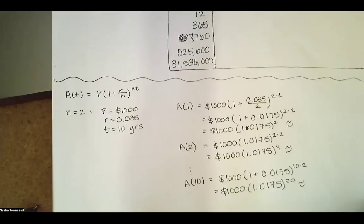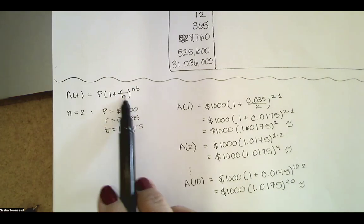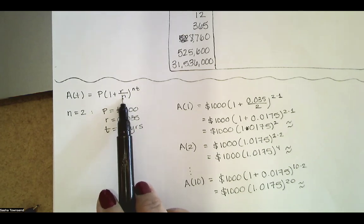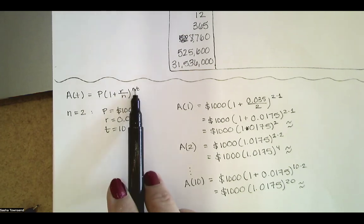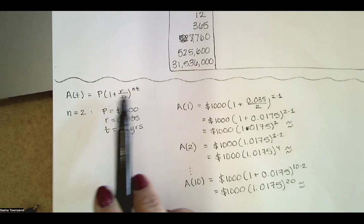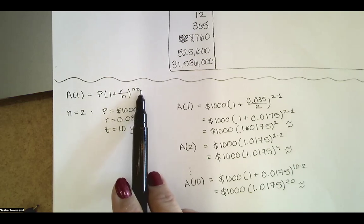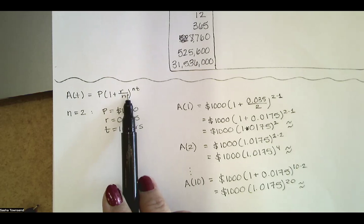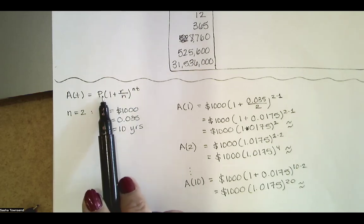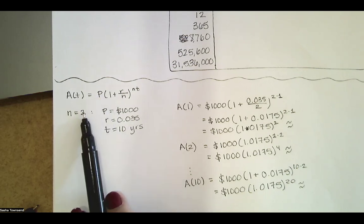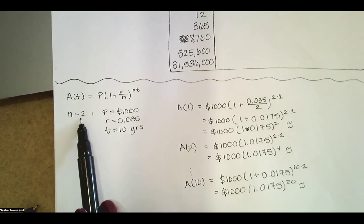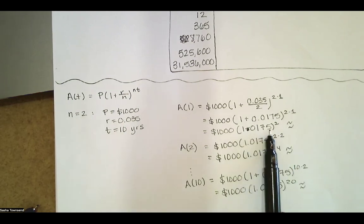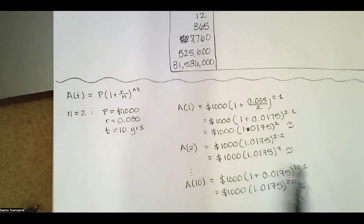The formula says: take the interest rate, divide it by the number of compoundings per year, then multiply by one plus r over n that many times per year, and repeat every year. The exponent n times t gives the total number of times interest has been compounded. The r value is the annual interest rate. Splitting the 3.5 percent into smaller pieces and compounding more often actually results in higher balances.